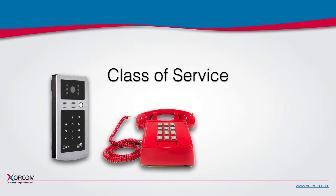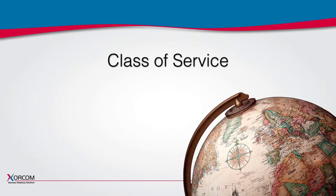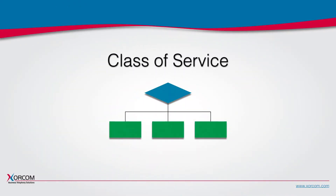Class of service defines what a user of the system can or cannot do using their extension, including features, dial destinations, and routes. For example, it is possible to configure a class of service for lobby phones or door phones that will only be able to make internal calls and not use any features other than play their extension number. Another example is blocking certain extensions from dialing international numbers, or from doing that at certain times such as nights and weekends. Class of service may also be implemented on things other than extensions, such as IVRs or trunks, to limit what incoming call users can do.